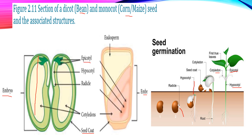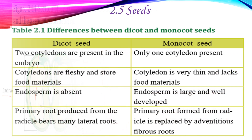The differences between the dicot and the monocot: in the dicot the cotyledon is thick and well developed, whereas in the monocot there is only one cotyledon.